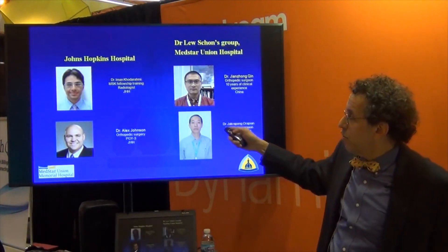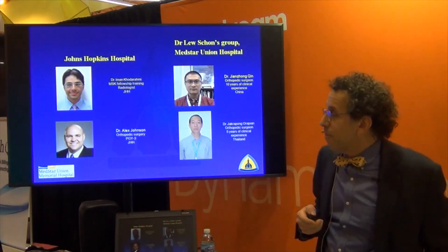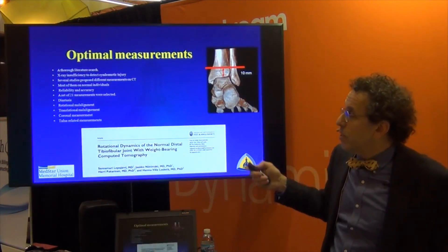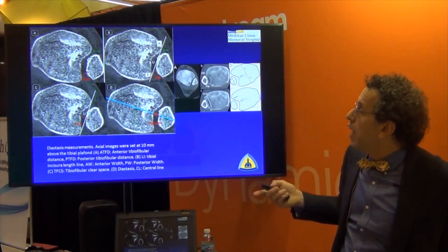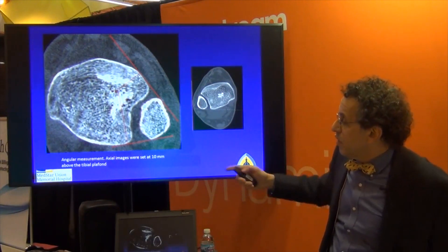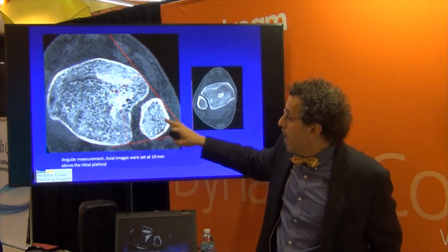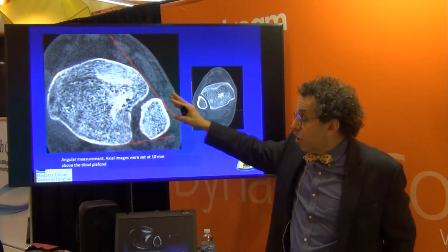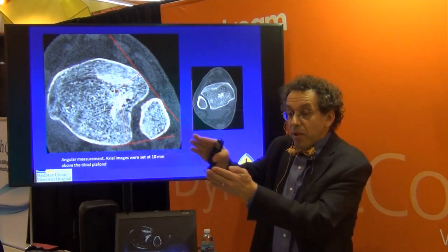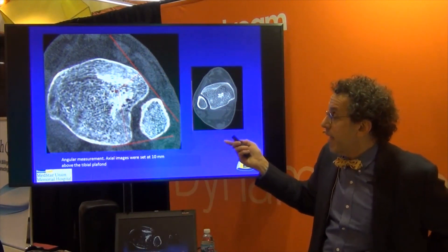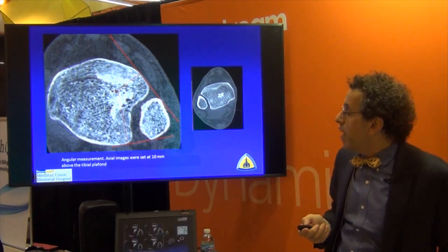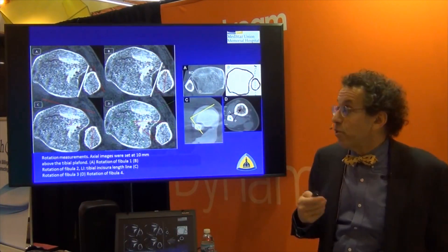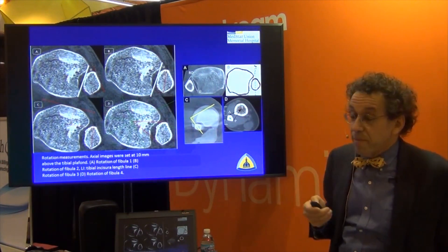I want to give credit to two of my foreign fellows and one of the Hopkins residents I worked with, Dr. Imam, who is a radiologist at Hopkins, for looking at these measurements and proving that we have good reliability and reproducibility. That's what we found in this paper that will be published soon. This angular measurement is particularly good and useful. As the fibula displaces laterally, your angle becomes more acute, more narrow. As the fibula goes in, your angle becomes larger. It's a very good, easy measurement technique — quick to the eye, and we found it very helpful. These other measurements are also very useful in looking at the syndesmosis, and they all could be part of your algorithm for assessing it.